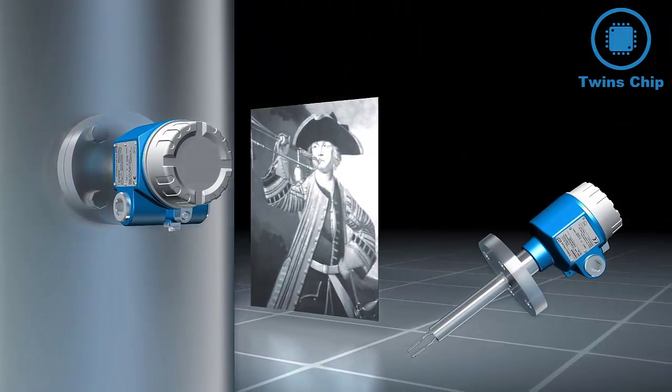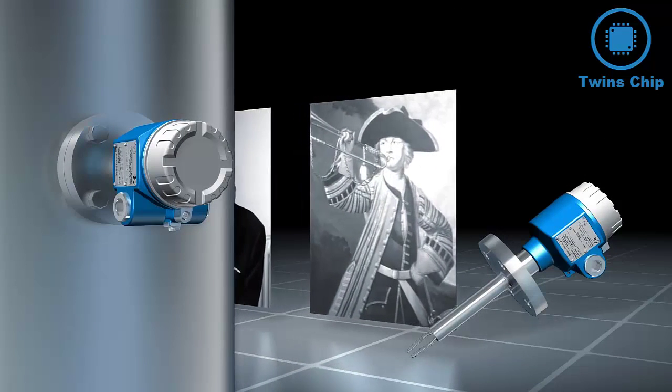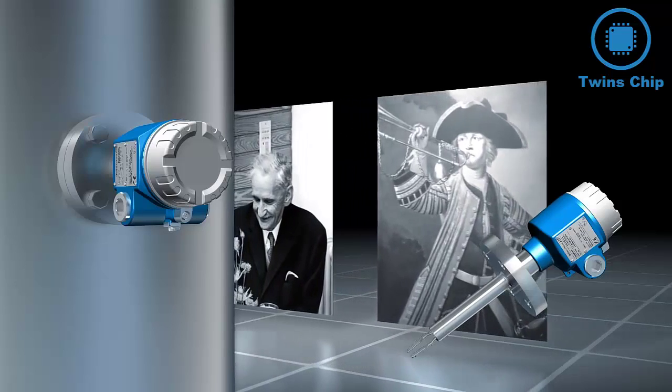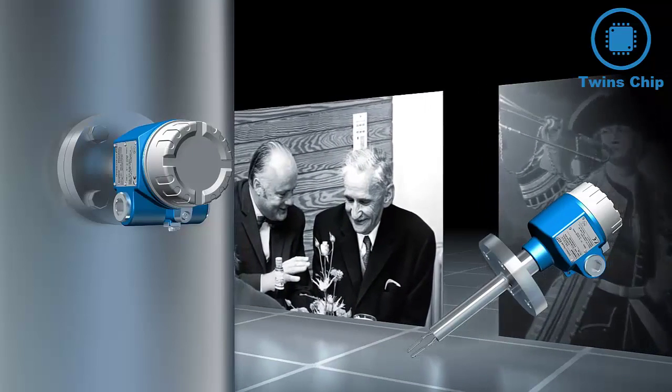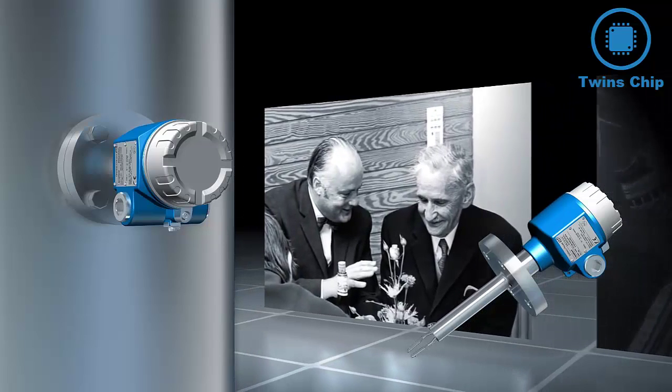The tuning fork, which John Shore designed more than 300 years ago, served as a basis for the Vibronic principle invented by Endress+Hauser in 1967.